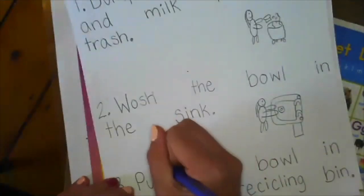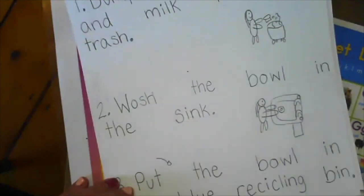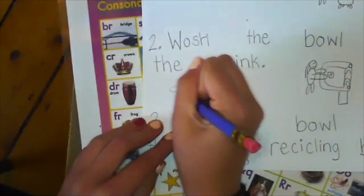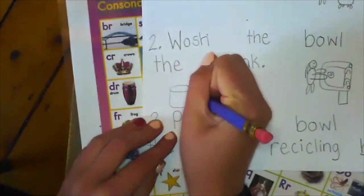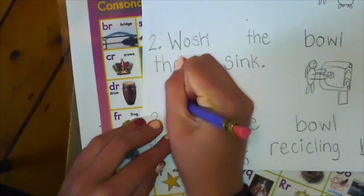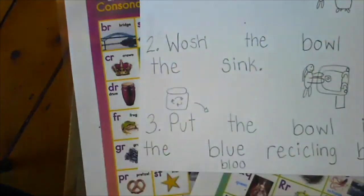And maybe I'll draw a picture with an arrow. So I don't have space down here but I have space right here. I can draw the recycling bin. And I can even get my blue crayon and color it blue.